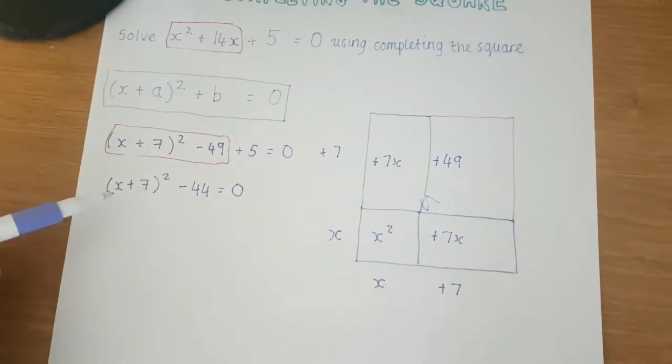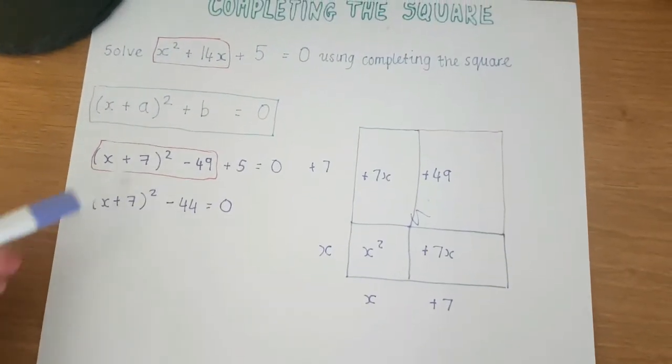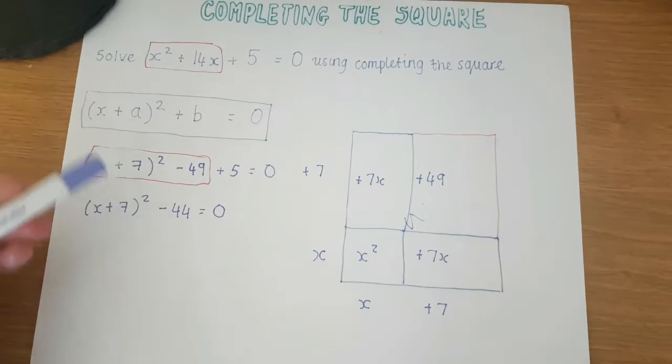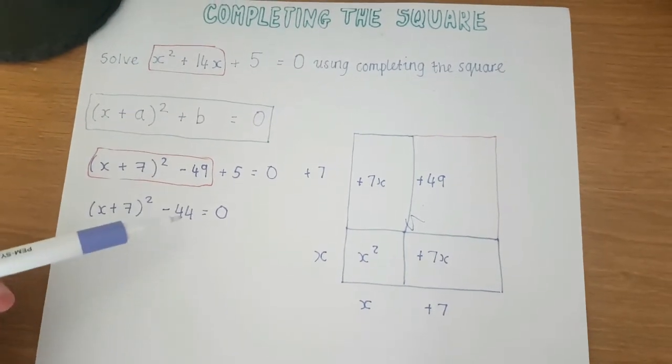And that is in completed square form already. My a value is +7, my b value is -44 and from this I can then rearrange to solve.